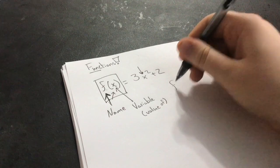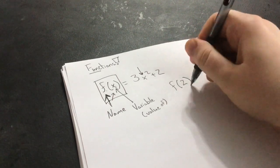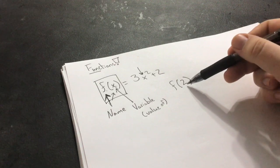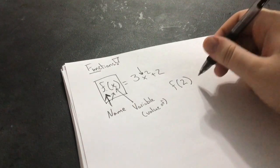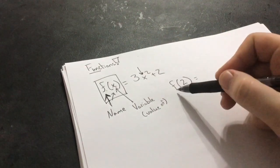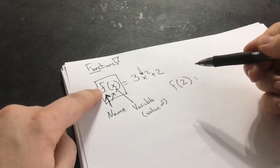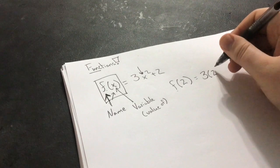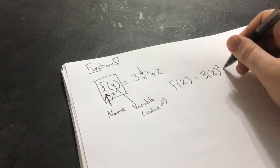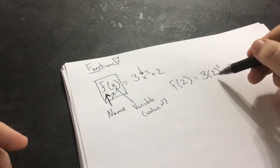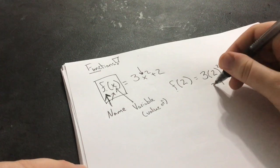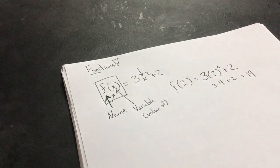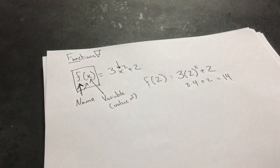If we saw f of 2, then what that would tell us is that all of our missing variables should be represented with a 2. So we would rewrite this equation because the f tells us we look at this equation here. And instead of writing x, we would write 2 because that's what's in our parentheses. And then in this case, we could just solve it, right? 2 squared is 4, 3 times 4 plus 2, well, that gets us 14. And then we solved f of 2. That's all there is to it.